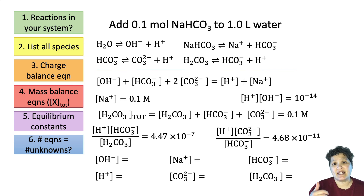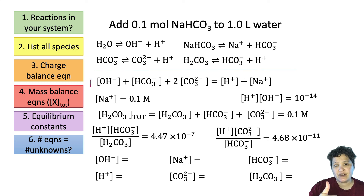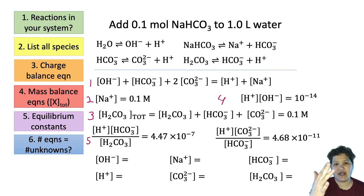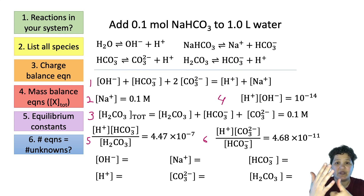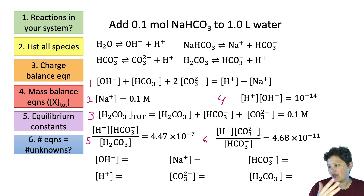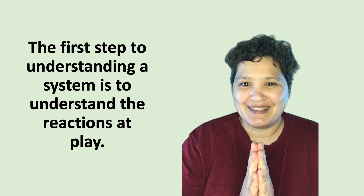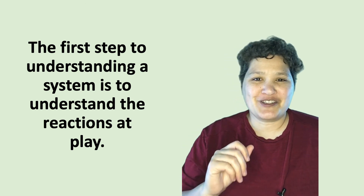Now let's count up. We have one charge balance equation, two mass balance equations, the dissociation of water expression, and two acid dissociation equilibrium expressions — a total of six equations for six unknowns. So we have set this up correctly. It seems really complicated, and it is. But the fun is just beginning.